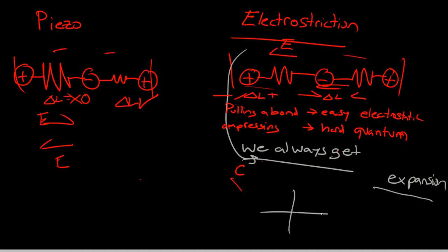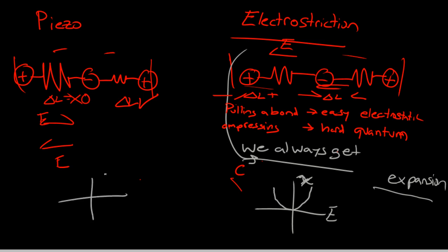So what does the graph look like? Let's say this is the electric field and this is the strain. It turns out that for electrostriction, it's sort of parabolic. While for piezoelectricity, it's a linear relationship — at least initially.